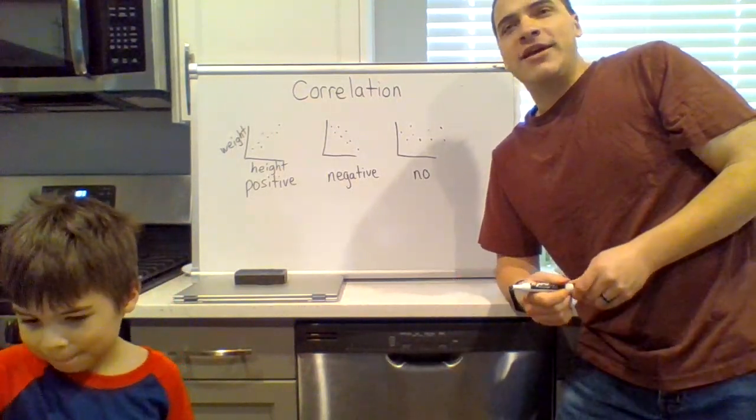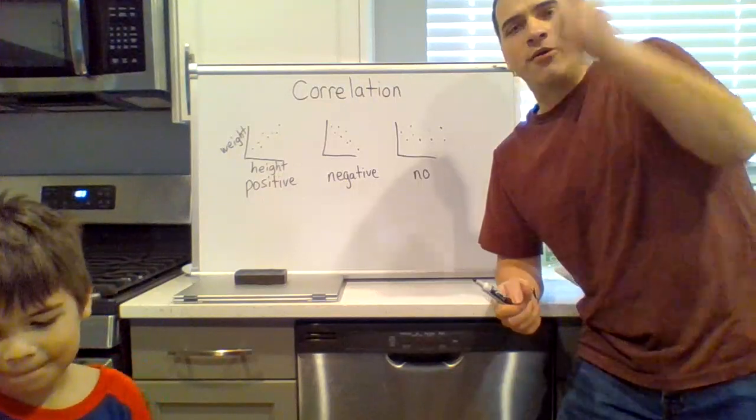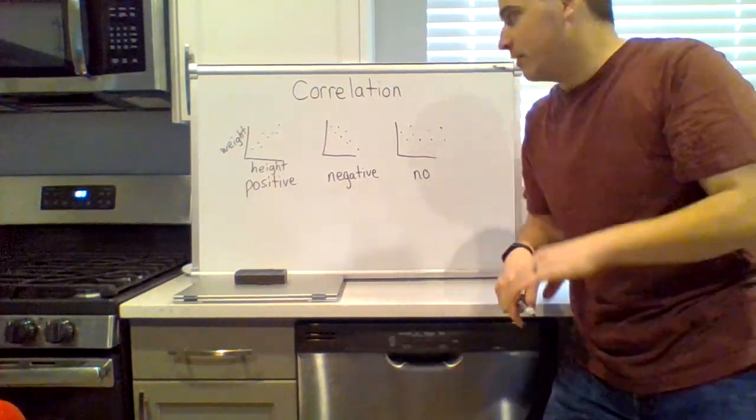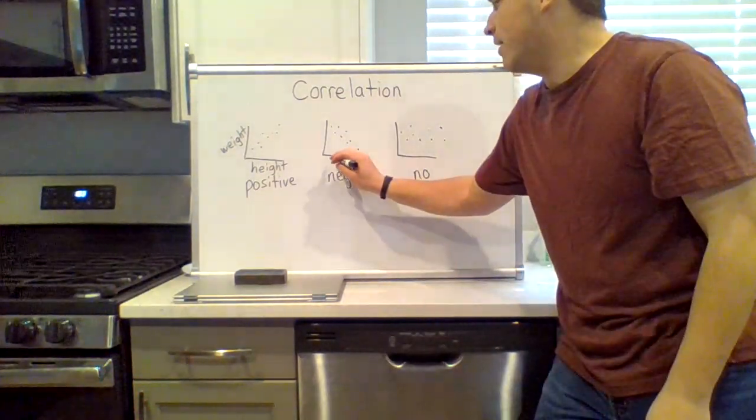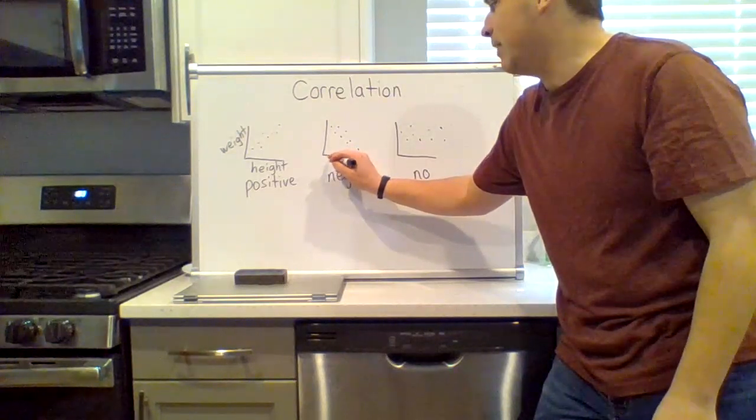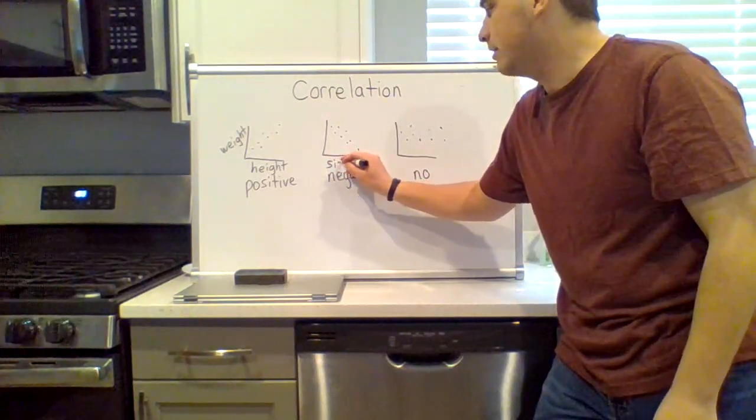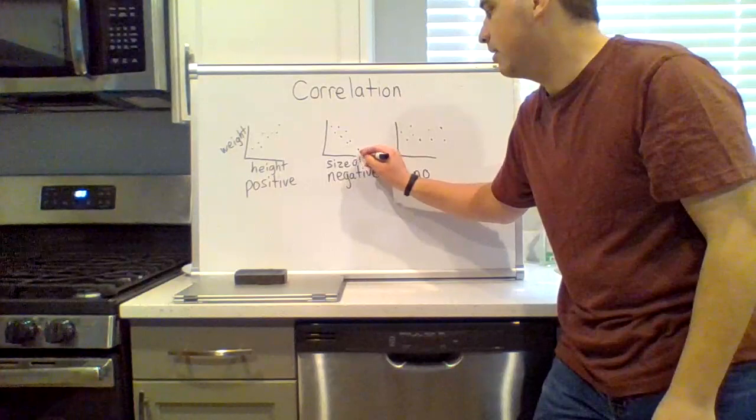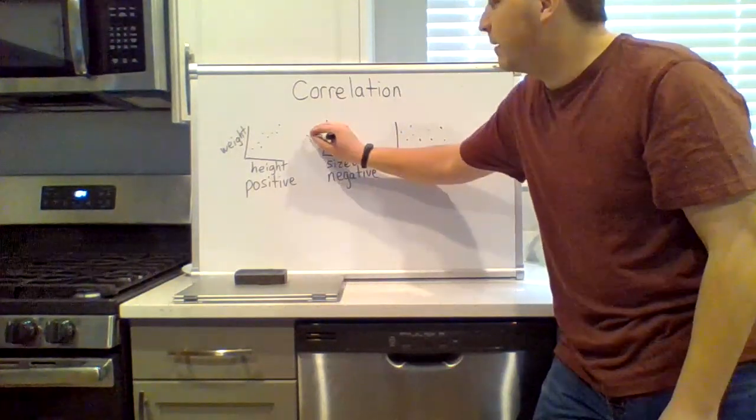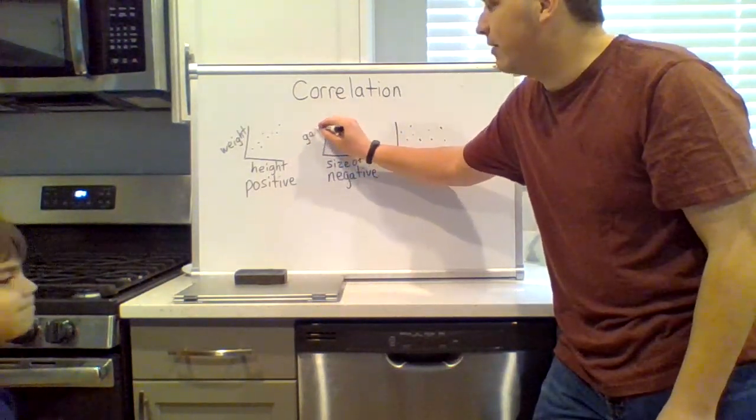Negative correlation means as one goes up, the other goes down. So an example of negative correlation would be size of car, how much it weighs, and the gas mileage. The bigger the car, the worse gas mileage.